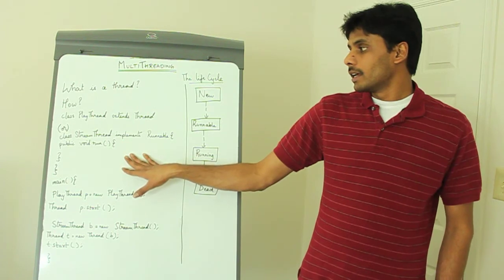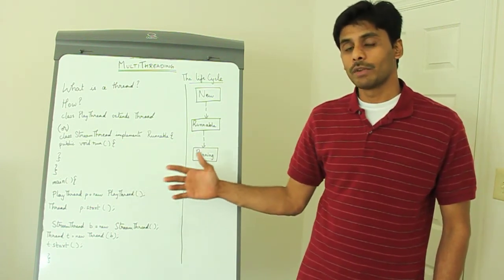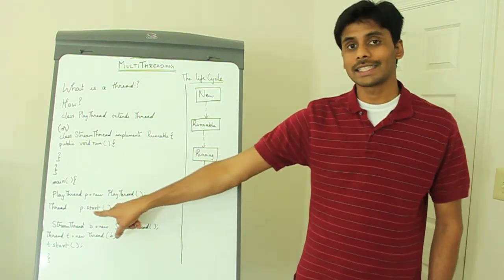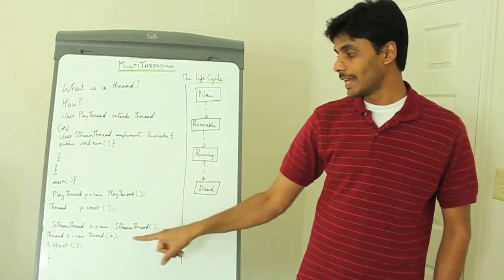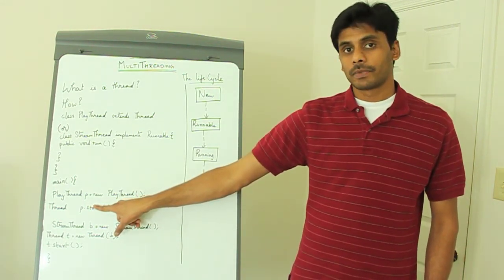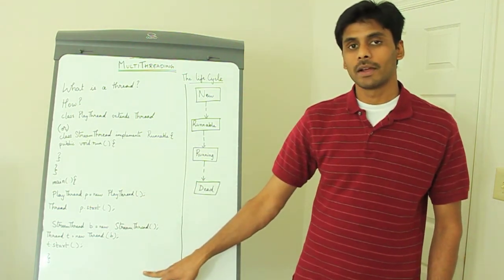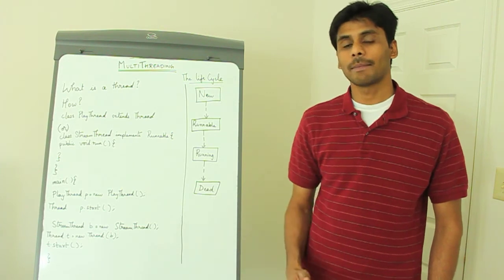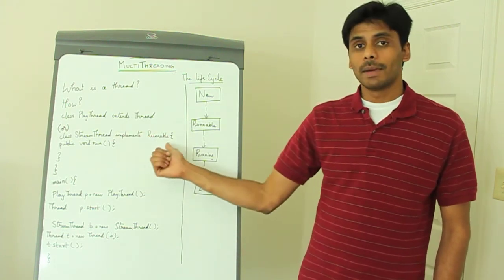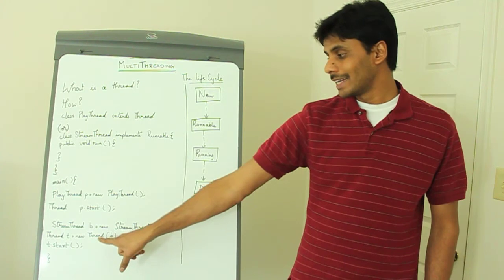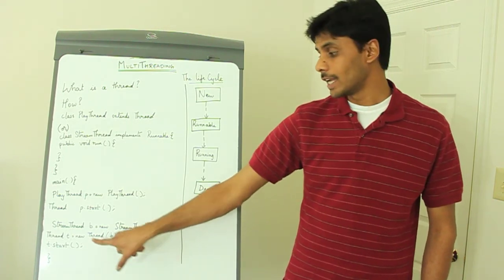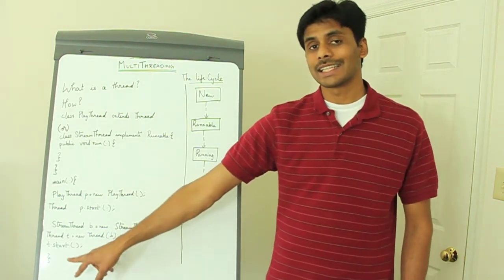Once we create the thread classes, to use them or to start them and invoke the thread methods, we create instances of the thread classes. We create an instance of the play thread which extends the Thread class and then invoke the start method on it. When you implement Runnable, you have one additional step before calling start — you cannot call the start method directly on the class that implements Runnable. Instead, you create an instance of the stream thread and pass it to an instance of a Thread class, then invoke the start method on that Thread instance.